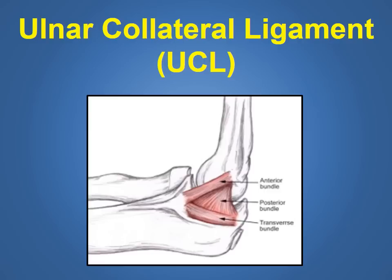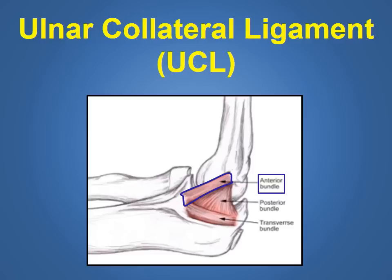The ulnar collateral ligament, shown in this slide in a reddish tint, is composed of three separate bundles including the anterior bundle outlined in blue, the posterior bundle outlined in yellow, and the transverse bundle outlined in green. The anterior bundle is the main functional component of the ulnar collateral ligament.